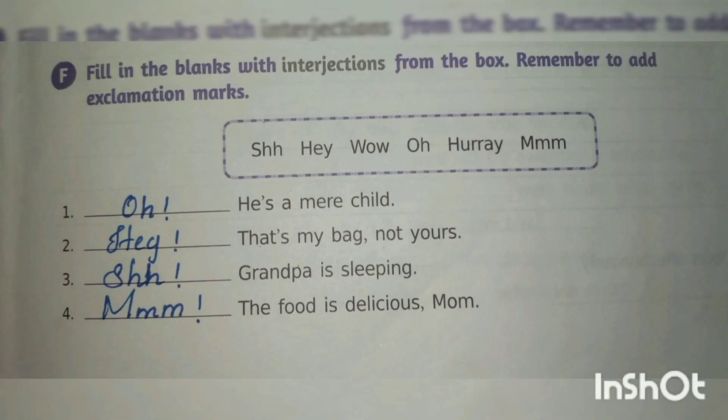Now look at the next exercise. Fill in the blanks with interjections from the box. Remember to add exclamation marks, because whenever we write interjections, we have to use an exclamation mark. The words given in the box are: shh, hey, wow, oh, hooray, and hmm. We have to use these interjections to fill in the blanks given below.